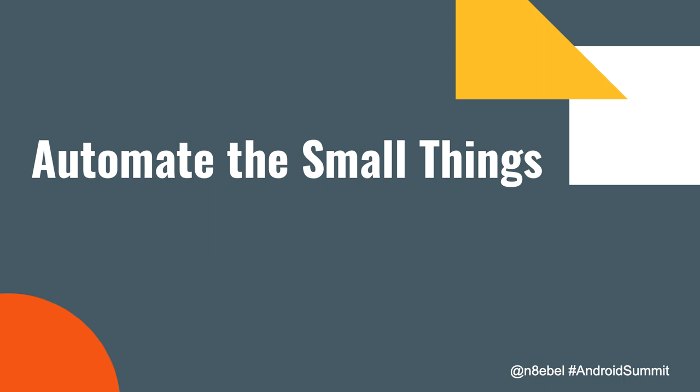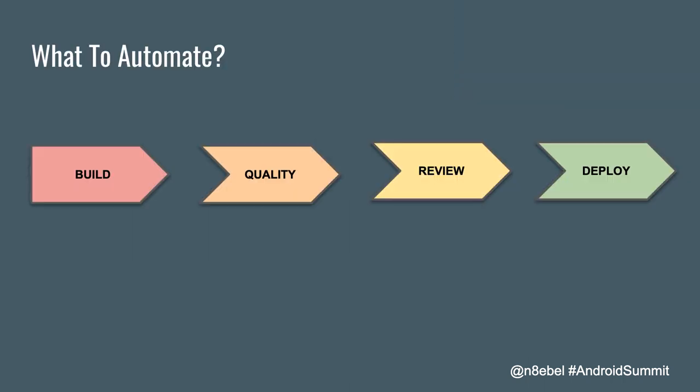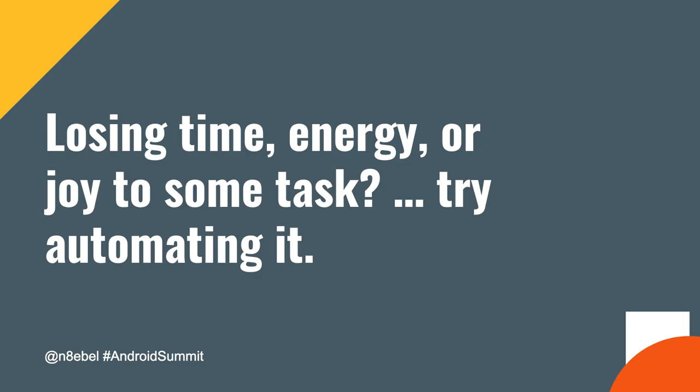So that's it for this talk. We've looked at automating the small things — lots of little tasks throughout the development workflow that can add up to some big time savings, friction being removed, and hopefully us being happier, more efficient developers. We looked at how to set up our build, patterns for validating code quality and automating that for everyone on our team, how to make the code review process more efficient and more enjoyable, and examples of how to customize your app deployment based on which branch you're on or time of day. I want to leave you with this question: are there places in your project where you are losing time, energy, or joy? If so, have you considered automating it?